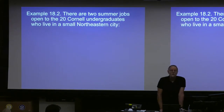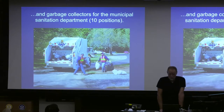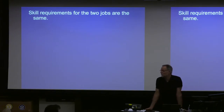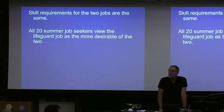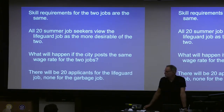Here's an example. Twenty Cornell undergraduates from the same small northeastern town want summer jobs. There are two possibilities: they can be lifeguards at the local beach — ten openings — or sanitation workers — ten openings. Skill requirements for the two jobs are the same. All 20 job seekers, unsurprisingly, view the beach job as the more attractive of the two. What would happen if the city posted the same wage for both jobs? All 20 applicants would apply for the beach job and nobody would apply for the sanitation job.